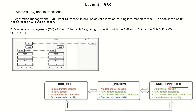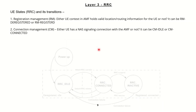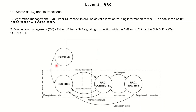In RRC connected mode, the network has full control over the user and data starts transmitting between the UE and the AMF. These are broadly the differences between the three different states.